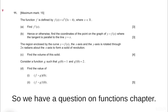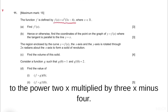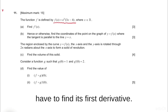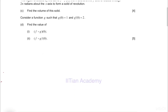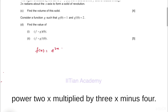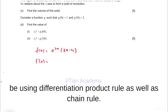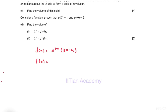Hello friends. We have a question on the functions chapter. The function f is defined by f(x) = e^(2x) multiplied by (3x - 4). In the first part we have to find its first derivative. So f(x) = e^(2x) multiplied by (3x - 4). For the first derivative f'(x), we will be using the product rule as well as the chain rule.